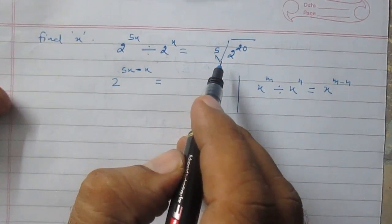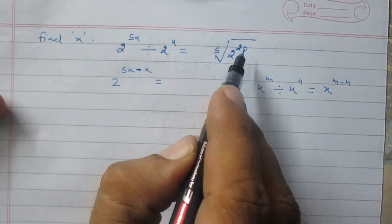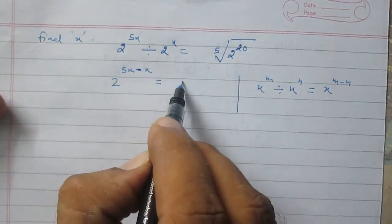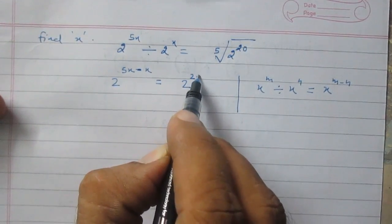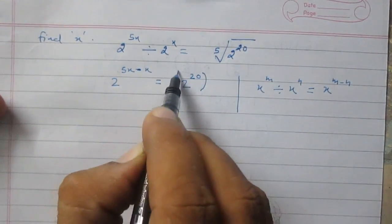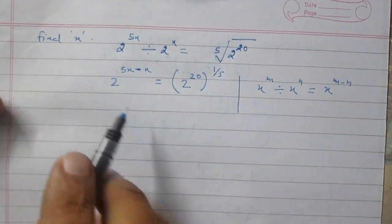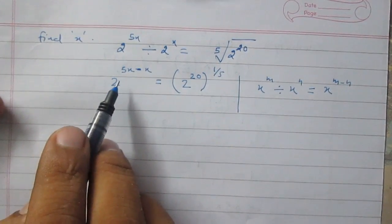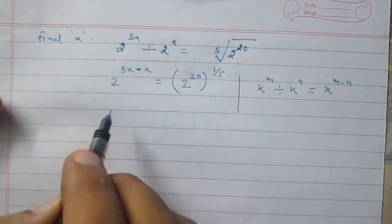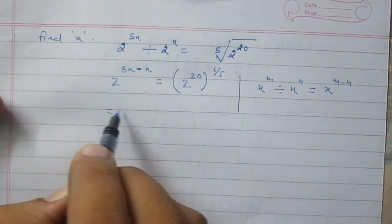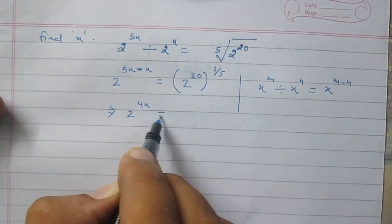And on the right hand side, there is the fifth root of 2 raised to the power 20. So, it is equal to 2 raised to the power 20 raised to the power 1 upon 5. Now, 2 raised to the power 5x minus x gives us 2 raised to the power 4x.